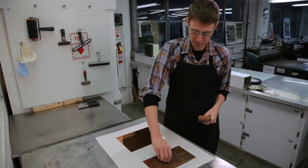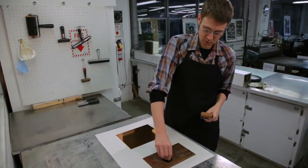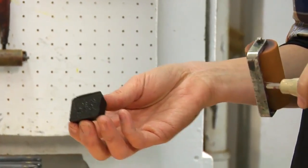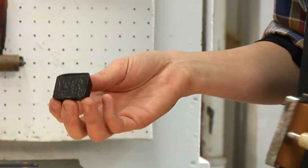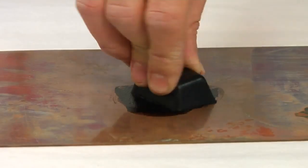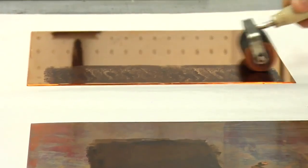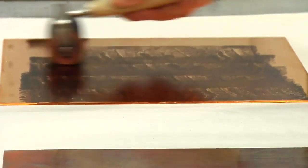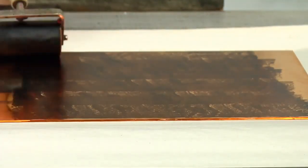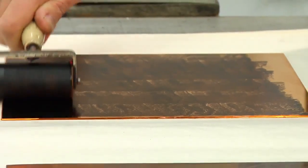The second step would be applying a ground to the plate. Hard ground is typically made from asphaltum, wax, and rosin. It acts as an acid resist protecting the white or non-image areas of the etching plate. And preparing that ground so that it is dark enough to see the copper showing through wherever the ground has been scratched away.